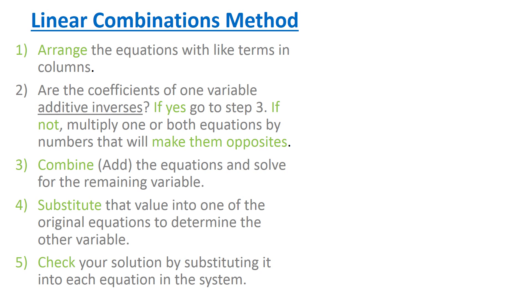Here are the steps for the linear combinations method that we're going to use to solve that linear system. First, arrange the equations with like terms in columns. As you can see, the x terms, the y terms, and then also the number on the right side of equal sign are already arranged. So we can move on to step two.